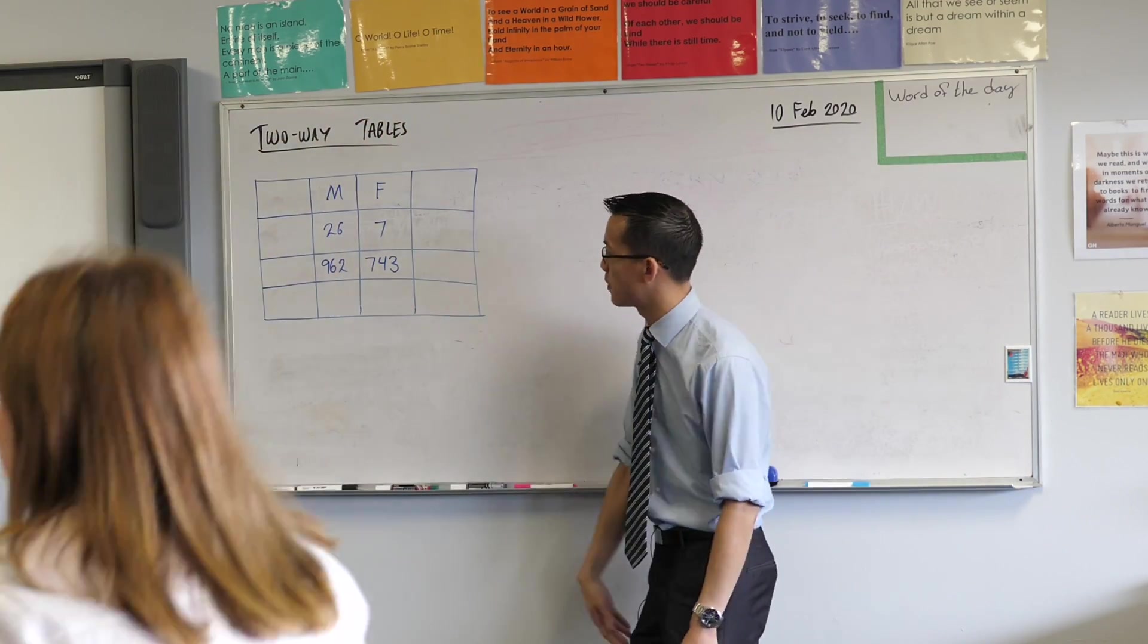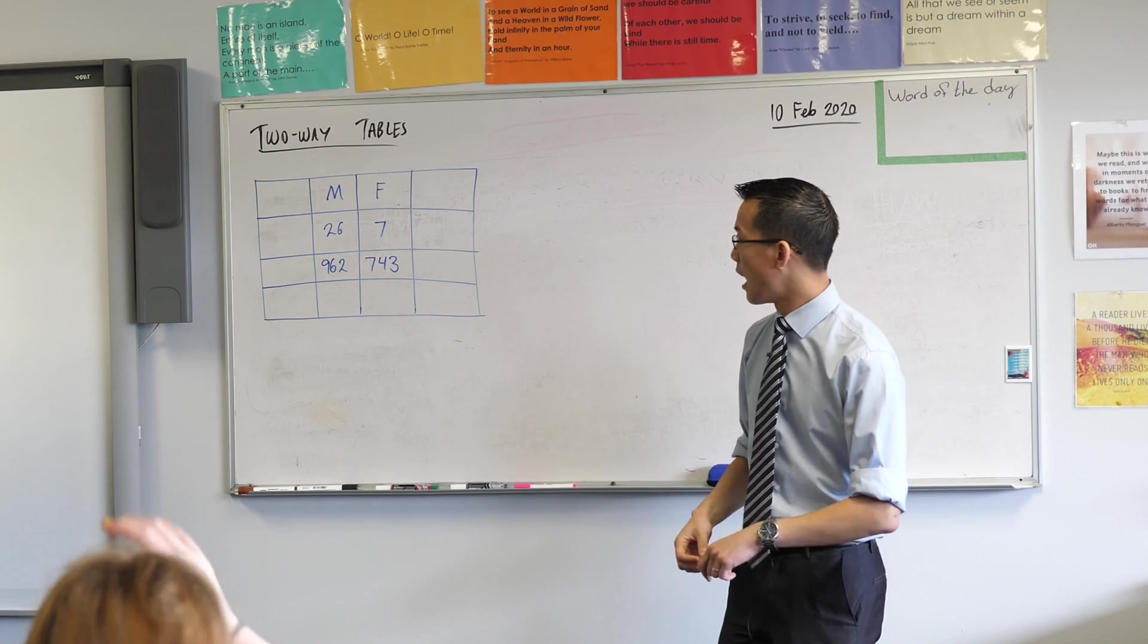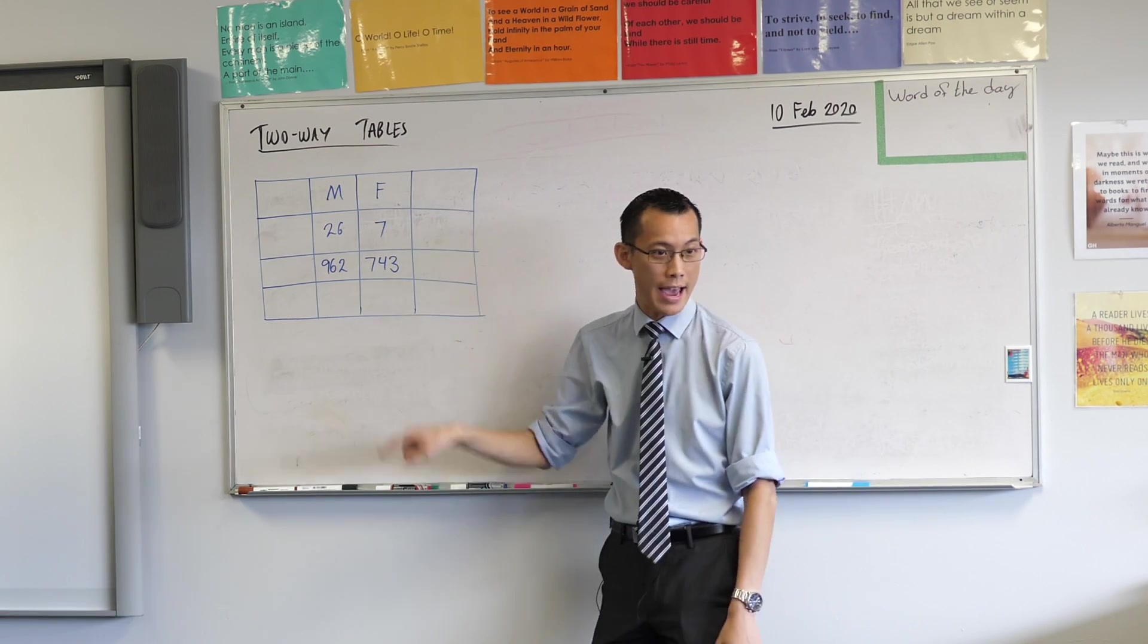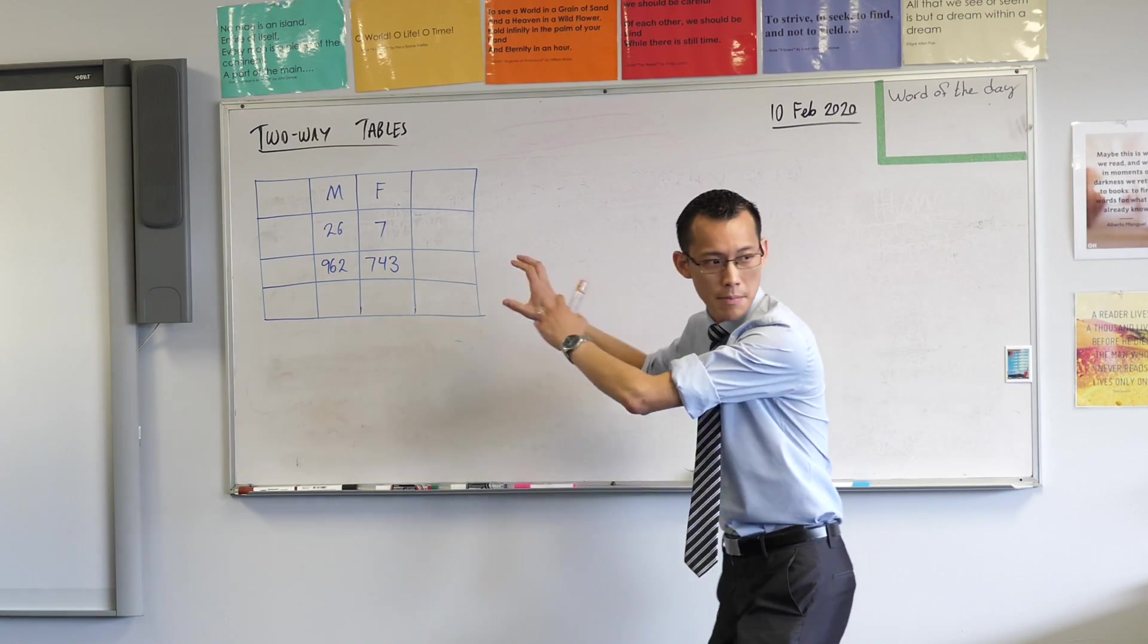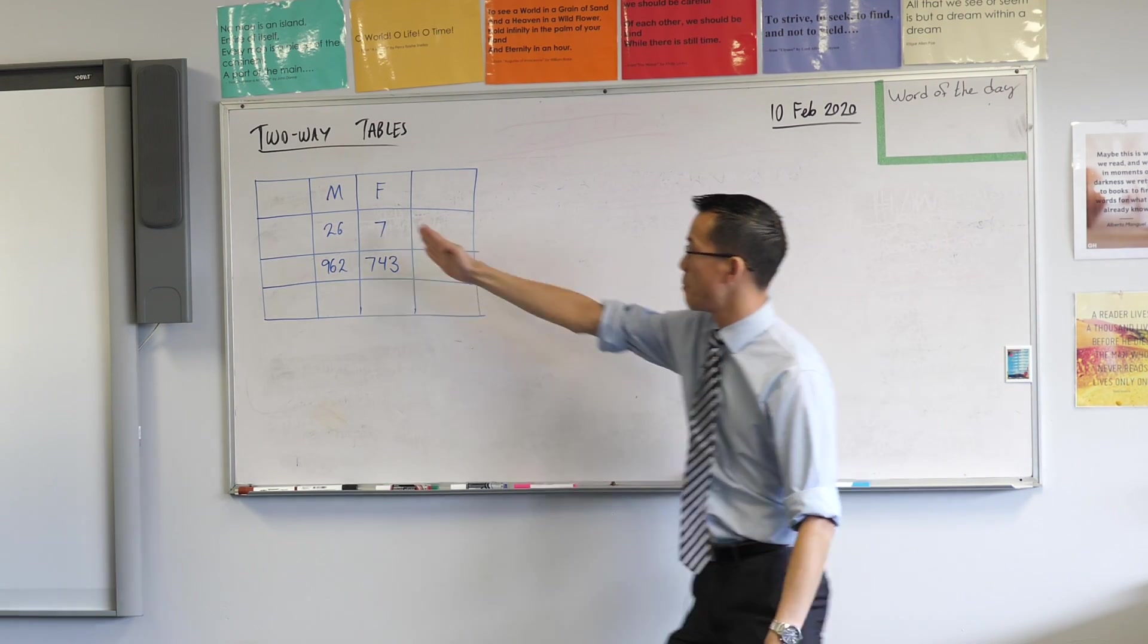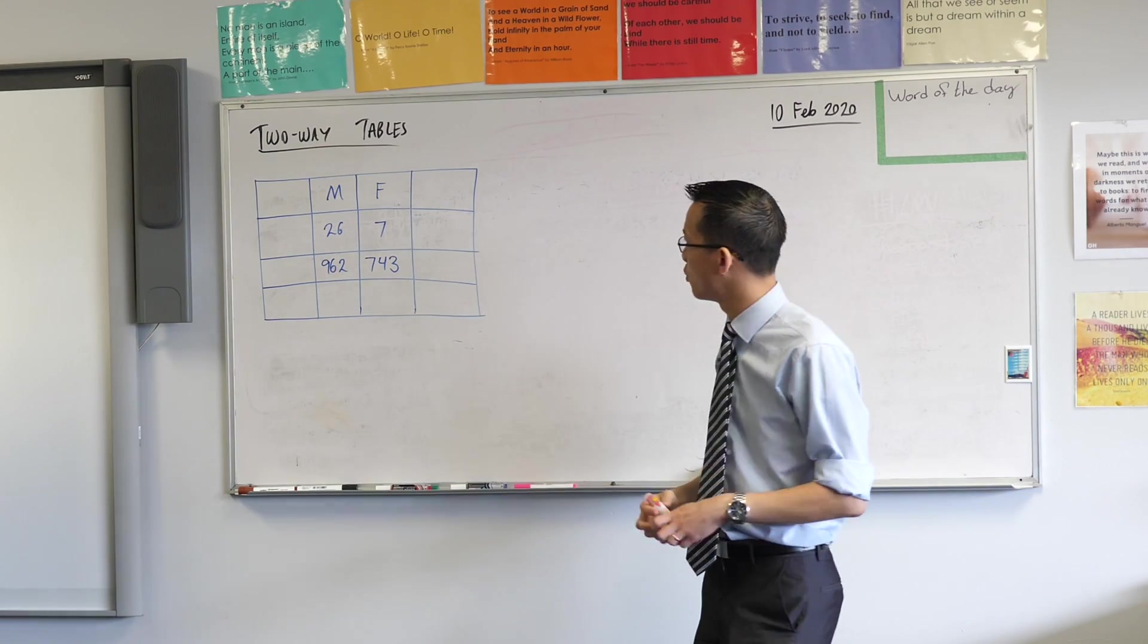So let's have a look at this. These tables are called two-way tables because we're going to be comparing two different forms of data on this table. You can see at the moment I've got these four numbers in here, two this way, two that way, but a two-way table can be much larger. So long as you're comparing one thing against another, it's two-dimensional. That's what we mean by two-way table.